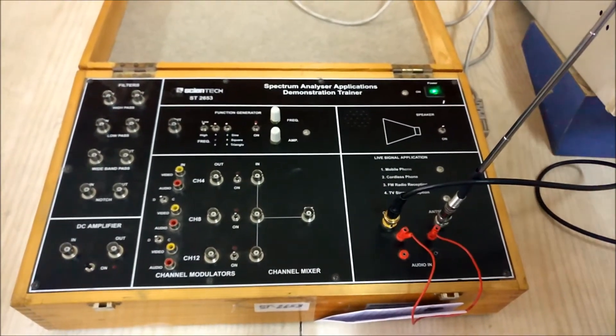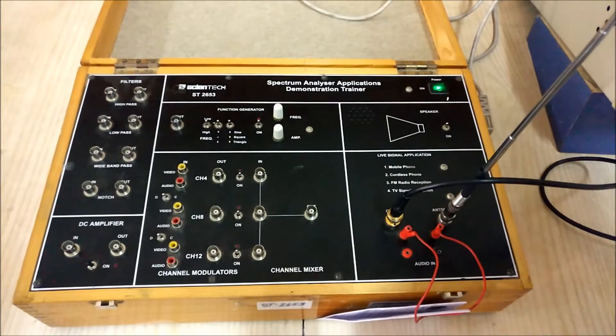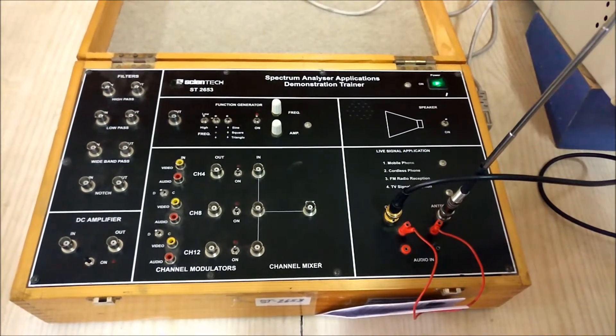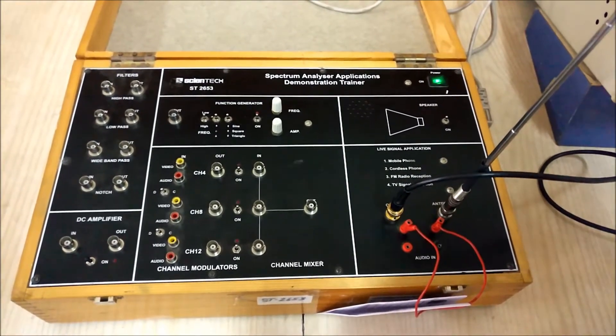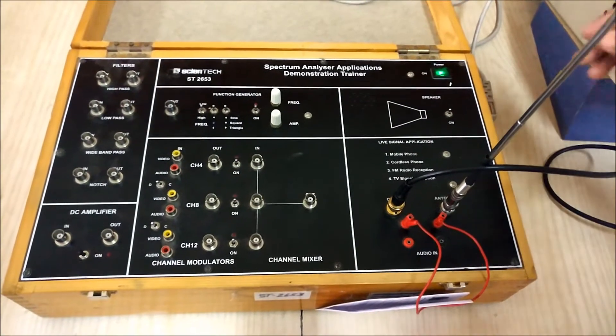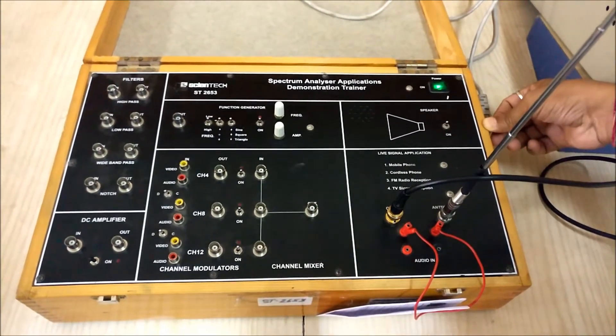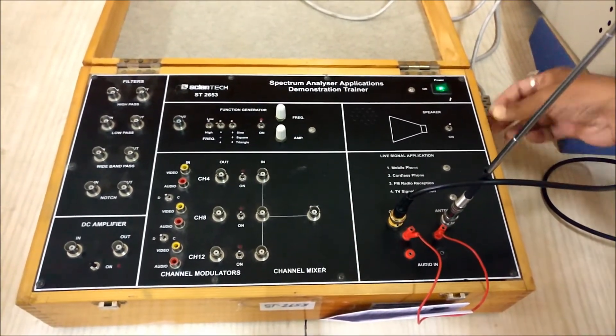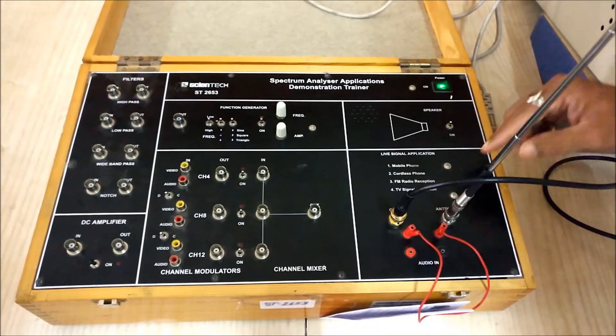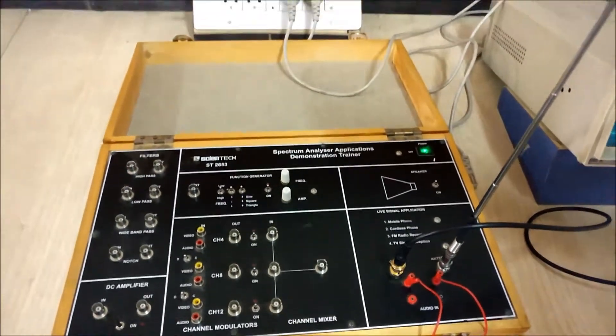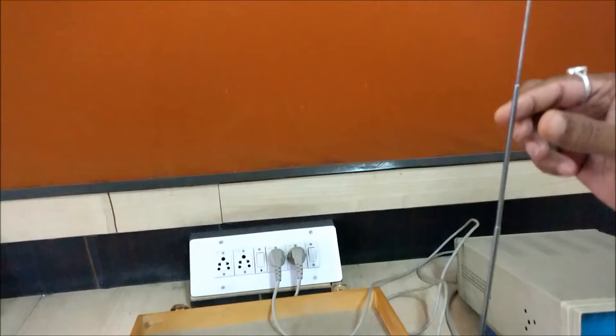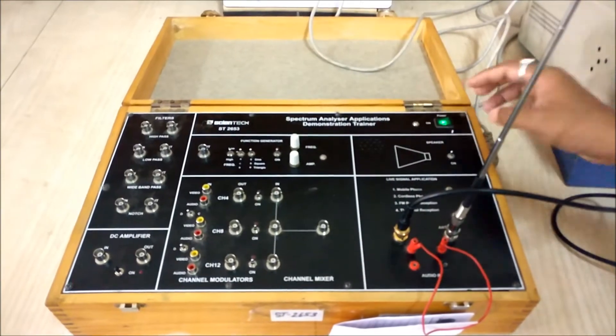Welcome friends, today we are going to detect the FM signal, particularly the commercial FM signal, using a spectrum analyzer. For that we have a spectrum analyzer application demonstrator trainer kit. Here we will see one antenna is connected, this is known as a telescopic antenna. You can see we have just switched on the kit.